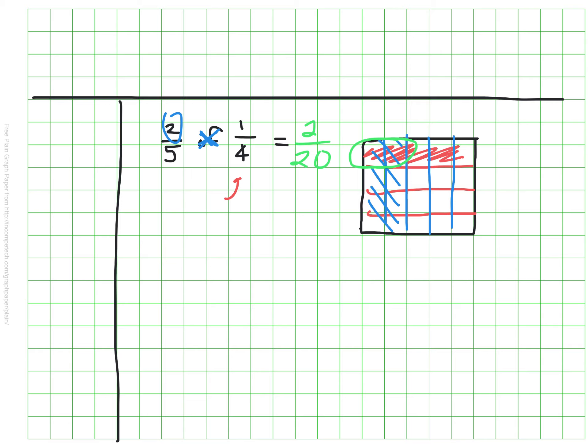As you look at this original number sentence, two-fifths of one-fourth equals two-twentieths, just ask yourself if you notice anything while you look at those numbers.